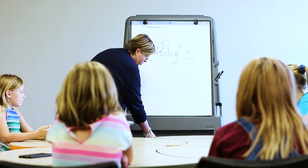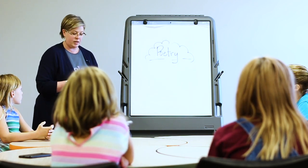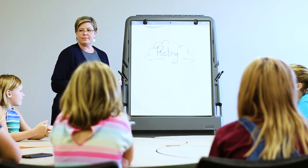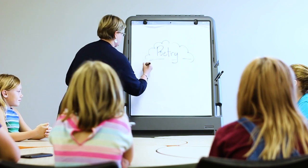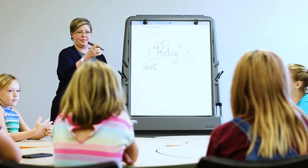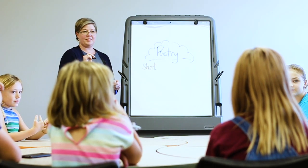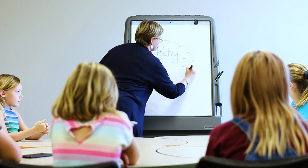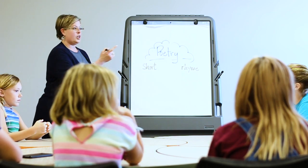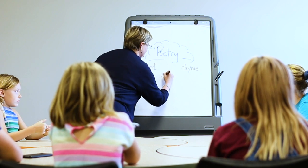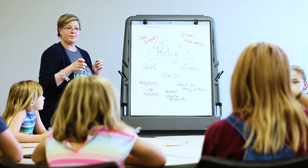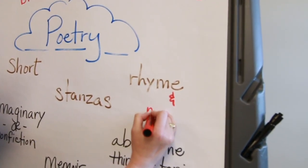I'm going to ask some questions, and you guys are going to tell me some things you know about poetry. What does poetry look like? It looks like a short paragraph, so it's short. Sometimes has rhyme — I like that word. Sometimes it rhymes. It can be written in stanzas. So poetry can be written in different formats. Rhyme and meter.